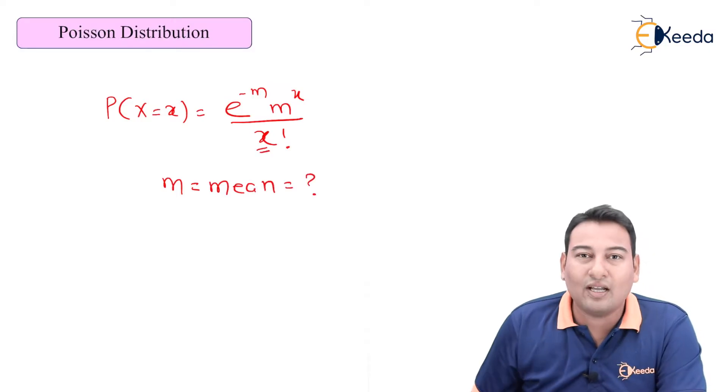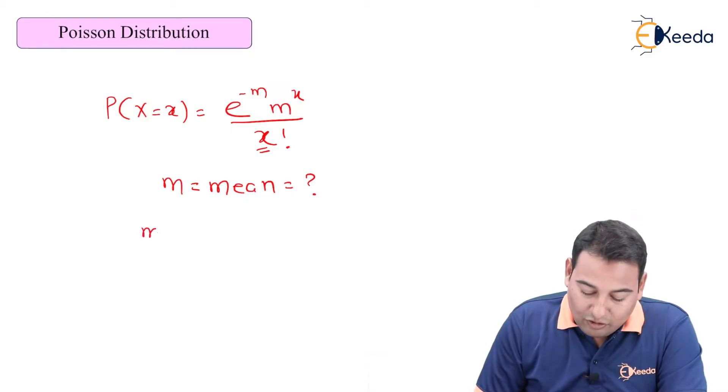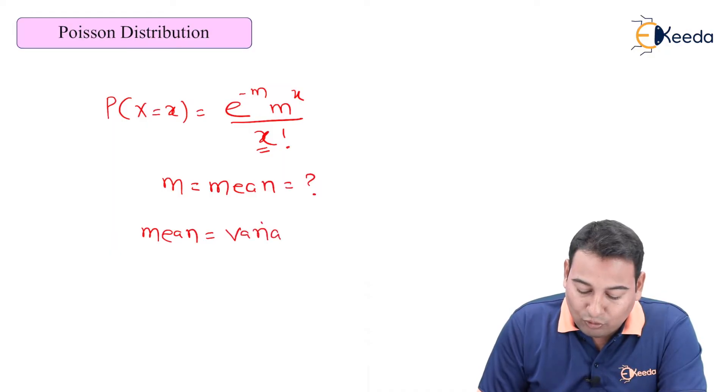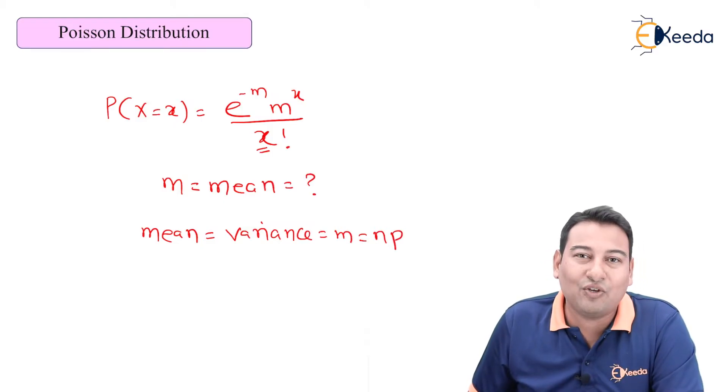X, as discussed, is not unknown - this is already provided in the problem. In case of Poisson distribution, mean and variance both are equal to np. In binomial distribution, mean was np and variance was npq, but here both mean and variance are equal to np.